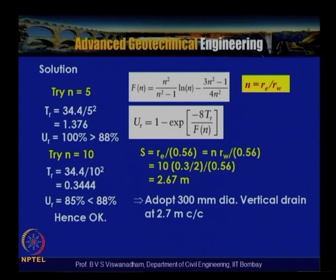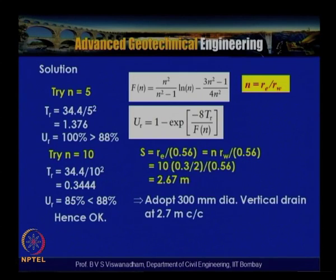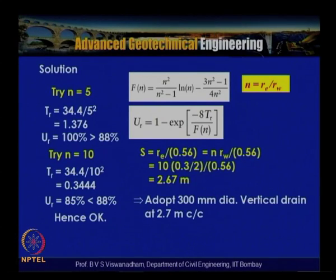Using trial and error: for N = 5, T_R = 34.4/25 = 1.376. Computing F(N) = [N²/(N²−1)]·ln(N) − (3N²−1)/(4N²) and then U_R = 1 − exp(−8T_R/F(N)) yields 100%, which exceeds the required 88% — we are on the conservative side. Trying N = 10, T_R = 34.4/100 = 0.344, and U_R works out to 85%, which is just below 88%.